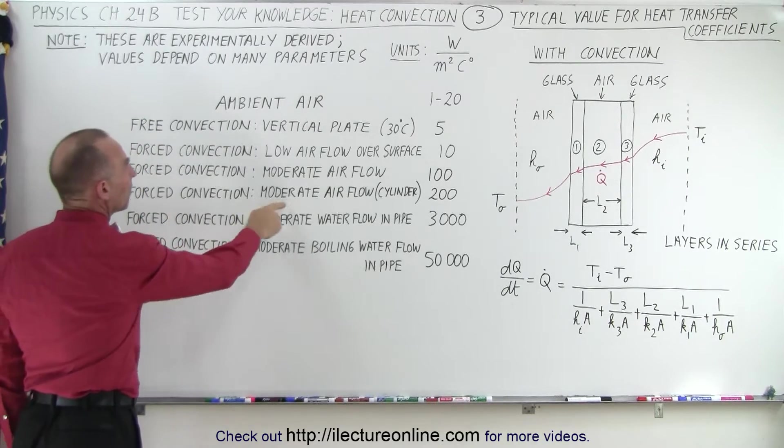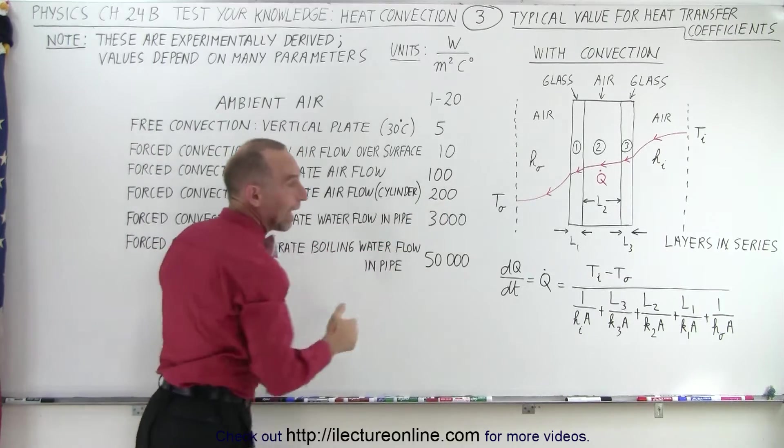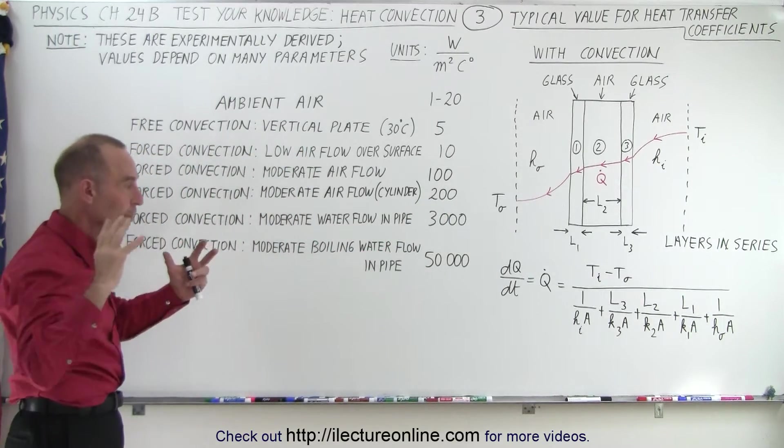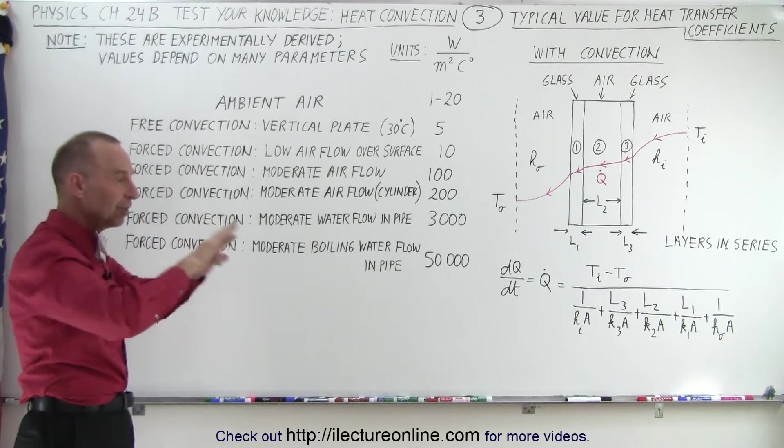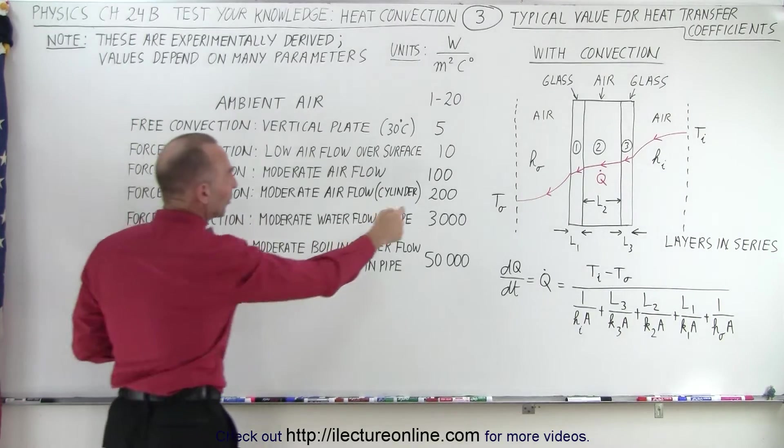Forced convection, moderate airflow across a cylinder is about twice as much as it is across a flat surface. So when it goes across a cylinder, it bumps into the cylinder, goes around it, it draws more heat out of it, and the number goes up.